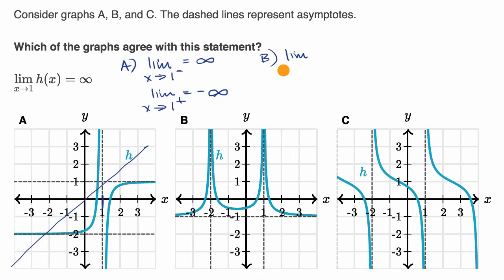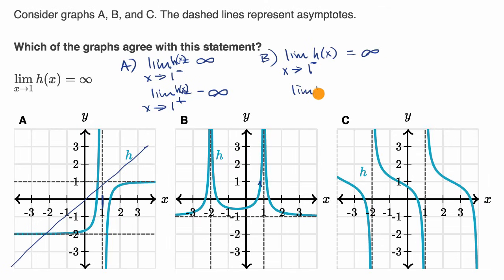Now let's look at graph B. The limit of h of x as x approaches one from the left — as we approach from the left, it looks like we're going to positive infinity. And the limit of h of x as we approach one from the right is also going to positive infinity. Since we're approaching the same direction of infinity from both sides, graph B meets the constraints.